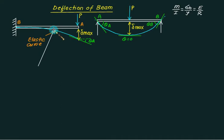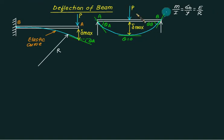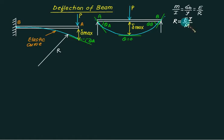This is basically the radius of curvature. We can write R = EI/M. The radius of curvature — how much the beam will deflect — is entirely dependent on three properties: E (Young's modulus), I (moment of inertia), and M (bending moment).